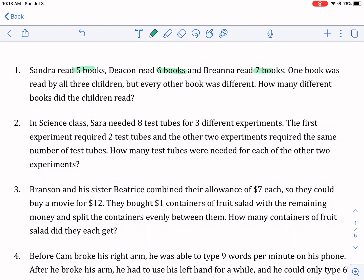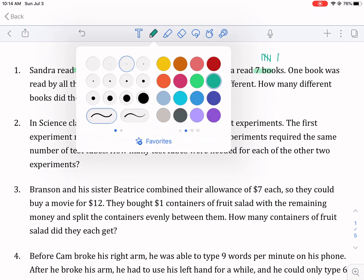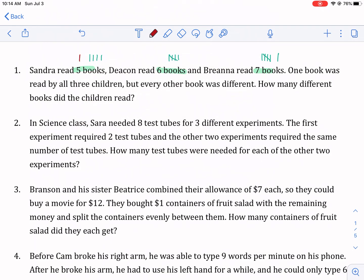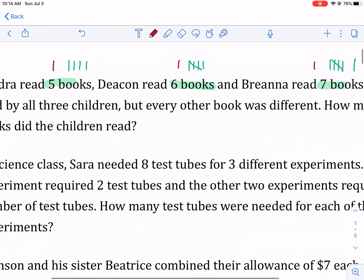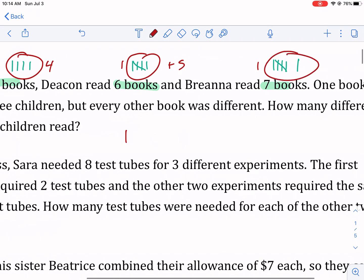If we know that one, two, three, four of these books are unique. One, two, three, four, five of those ones and one, two, three, four, five, six. The reason why I put that like that is because one book was read by all three children. So that red one, that's only one unique book. So then we have the four unique ones here plus the five unique ones and then plus the six unique